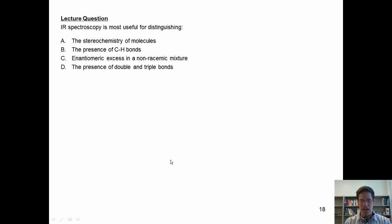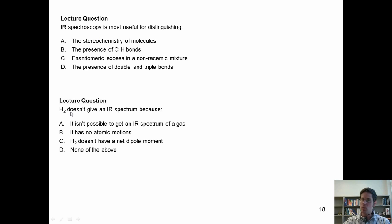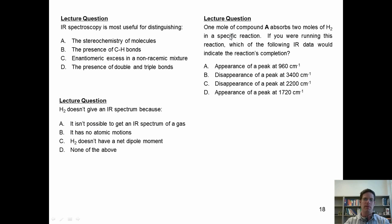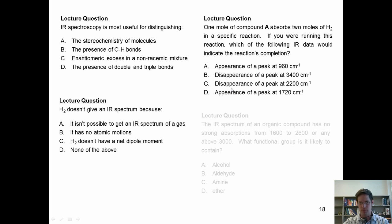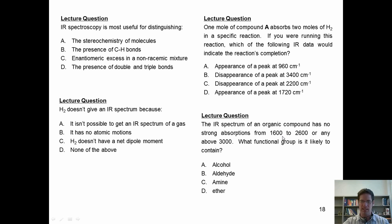Here are our IR standardized exam-like questions. First: IR spectroscopy is most useful for distinguishing what? Next: H2 doesn't give an IR spectrum — why? Next: one mole of compound A absorbs two moles of H2 in a specific reaction. What reaction could that be? If you are running this reaction, which IR data would indicate the reaction's completion? And finally: the IR spectrum of an organic compound has no strong absorptions from 1600 to 2600 or any above 3000 — what functional group is it likely to contain?